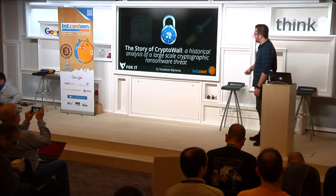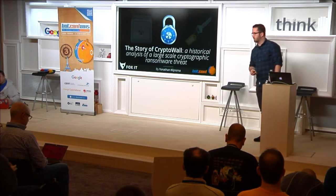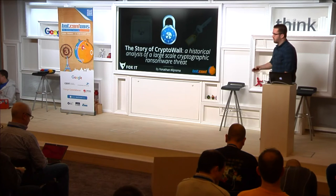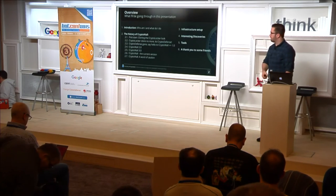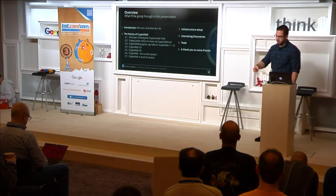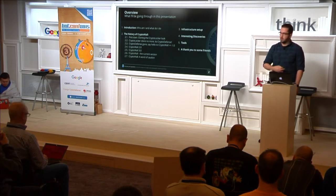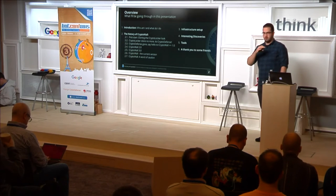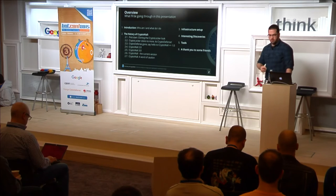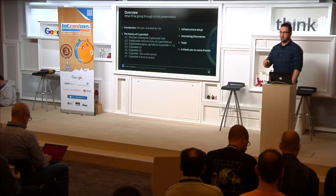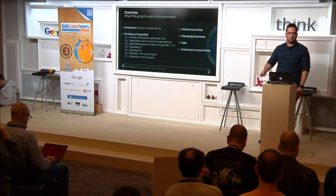I'm going to be talking about CryptoWall, but mostly what this talk will be is looking into the history of these guys — what they've been doing over all these years. A lot of people are looking at 3.0 or jumped in on 2.0, but I don't think a lot of people knew what they were doing before those versions. I'll quickly introduce myself, jump into the history, start with the first version, explain how it worked, then show changes per version. At the end I also have a word of caution. I'll show the infrastructure, some interesting discoveries, some tools I've made which will be on GitHub, and I'll thank some friends who've been sharing samples or information.